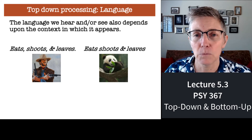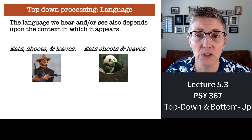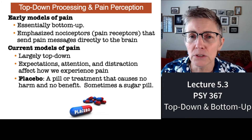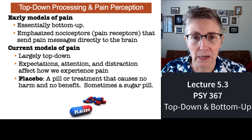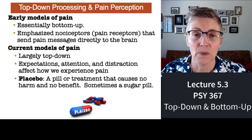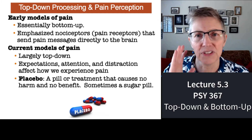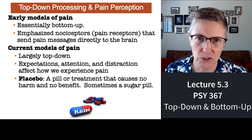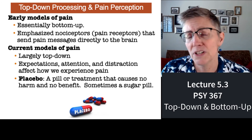Top-down processing also plays a big role in the perception of pain. Early models of pain perception were strictly bottom-up, emphasizing what your sensory organs said — a particular pain receptor sending signals to the brain. If pain receptors were sending many signals, you experienced a lot of pain; if not, you wouldn't experience much pain.